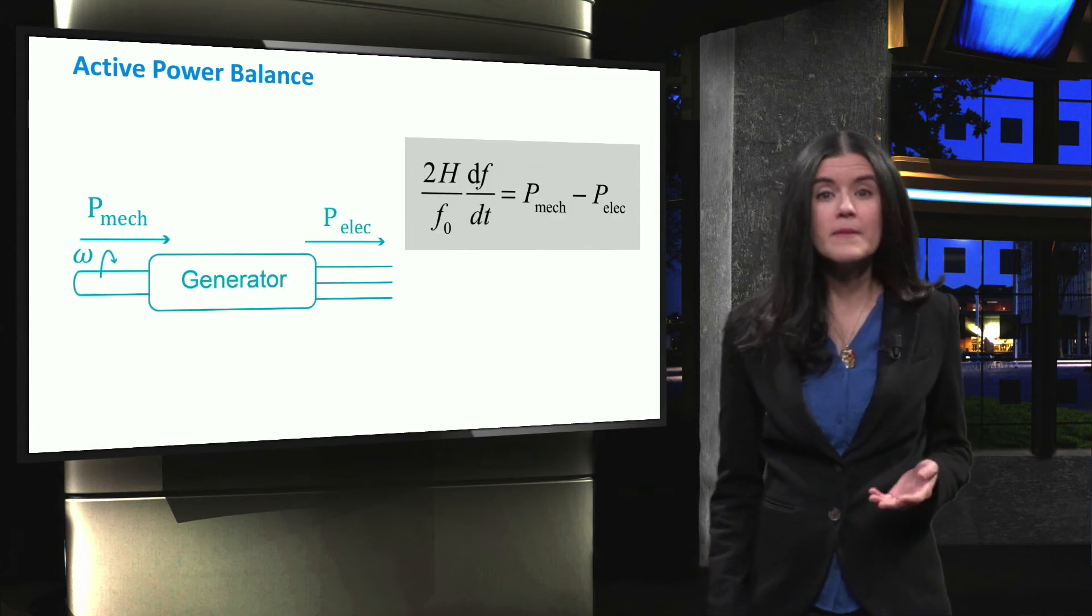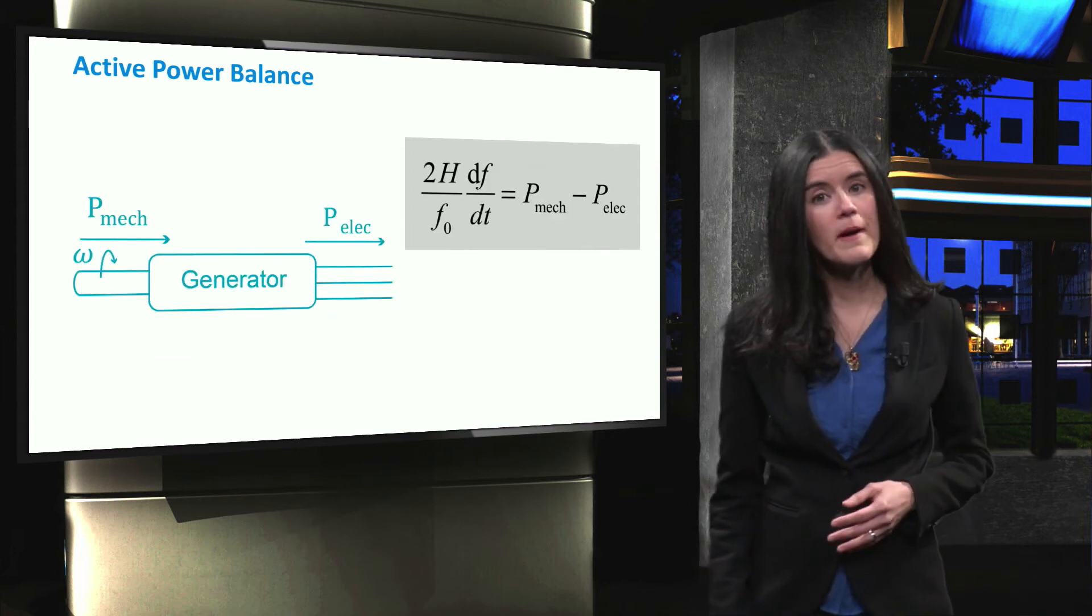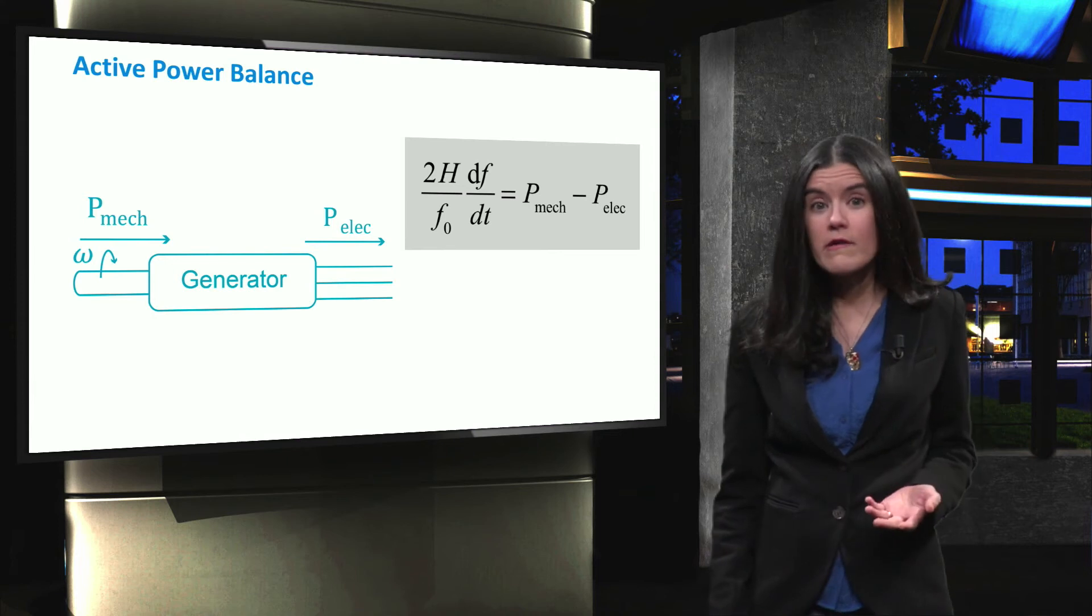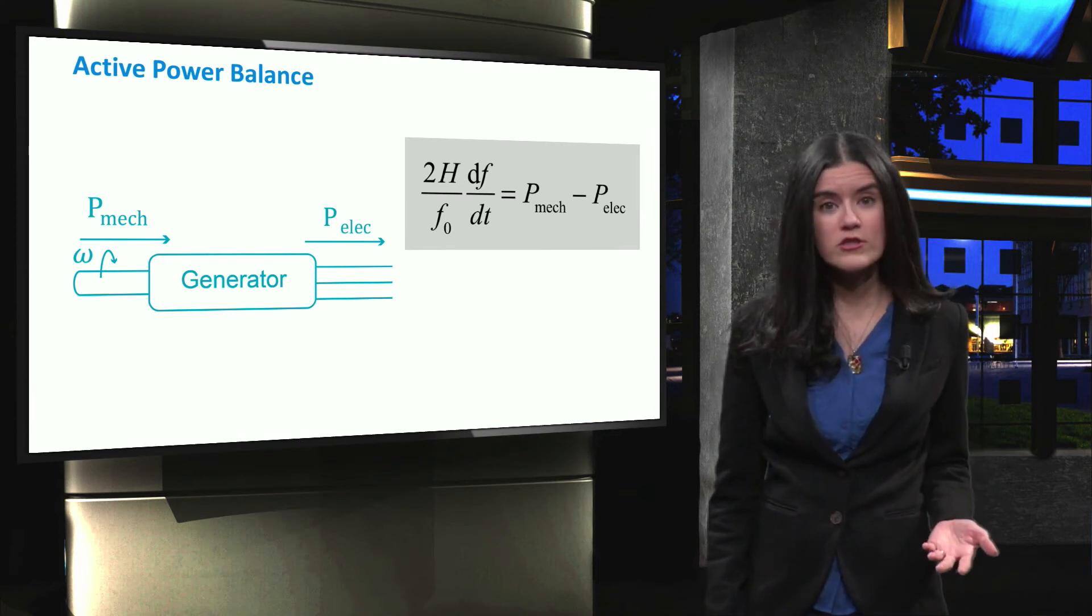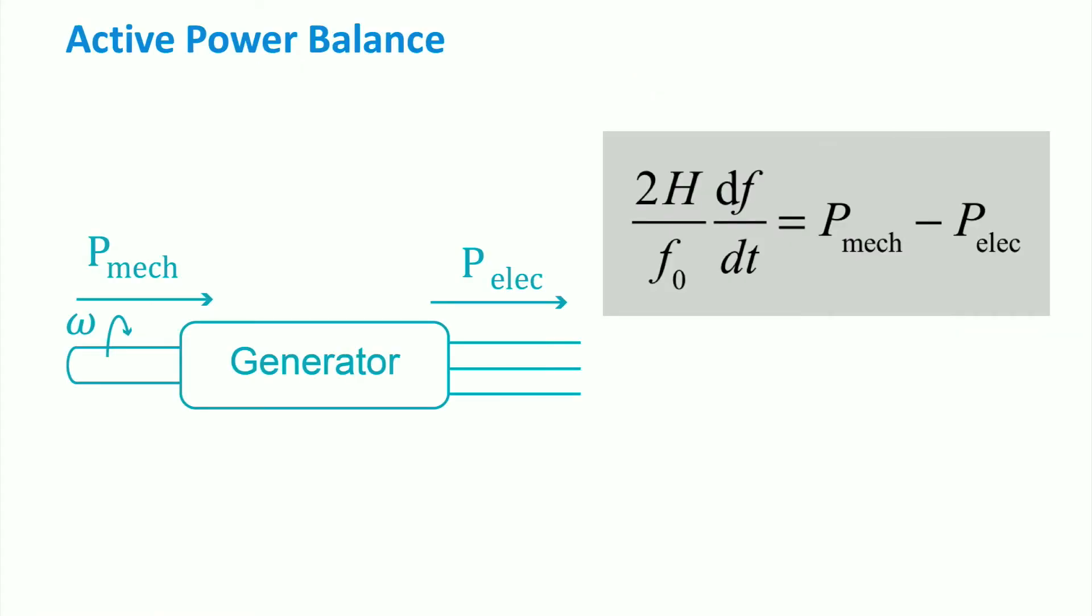When there is a mismatch between the mechanical and electrical power, the rotor speed or frequency changes according to the total inertia constant of the rotor shaft. The formula shows the relationship between the accelerating power and changes in frequency, here represented by its time derivative.